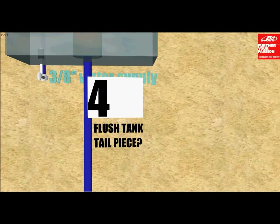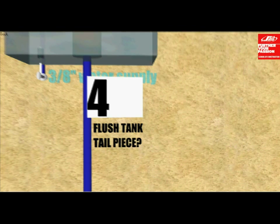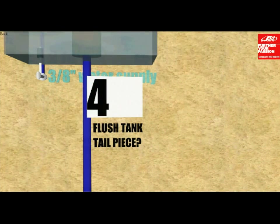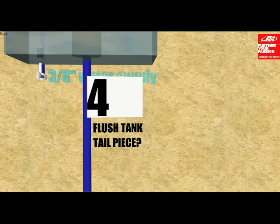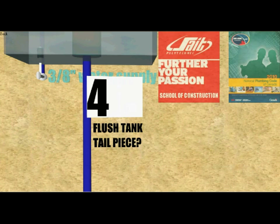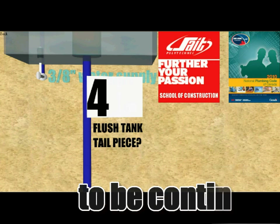To figure out number four, it refers to the flush tank tailpiece — the large blue pipe directly under the middle of the urinal flush tank. The only way to find this answer is in your modules, as it is not in the code book. The answer to number four is inch-and-a-quarter.